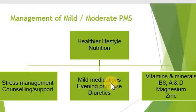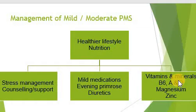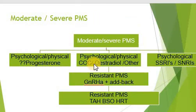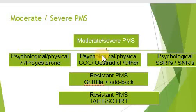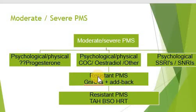Starting with mild medications — evening primrose oil and diuretics — then certain mineral supplementations like vitamin B6, vitamin A, vitamin D, magnesium, zinc, and calcium. If severity is increasing, move to moderate treatment: adding SSRIs and progesterone supplements. For psychological management, choose SSRIs or SNRIs, or differentiate whether symptoms are mainly due to progesterone or estradiol, then add a GnRH analogue if the patient is resistant to monotherapy with either progesterone or estradiol.